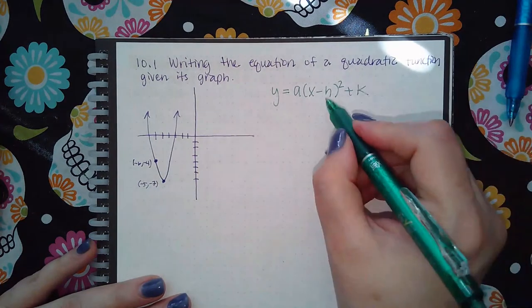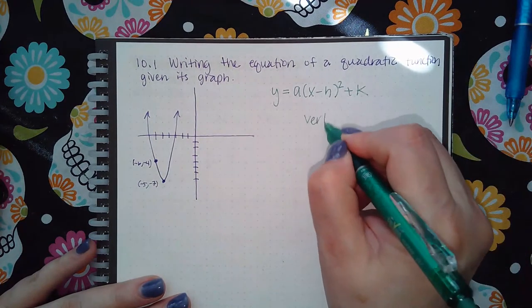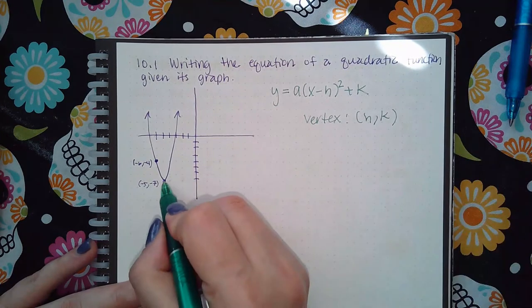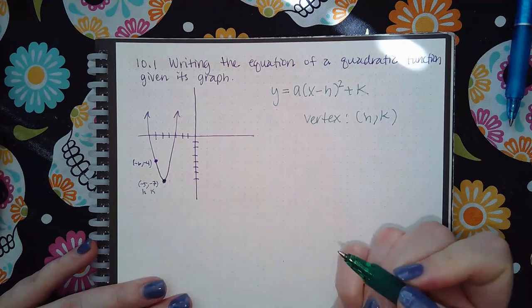We know that the h and the k comes from the vertex. The vertex is h and k. So my vertex is this point here, which means this is h and this is k.